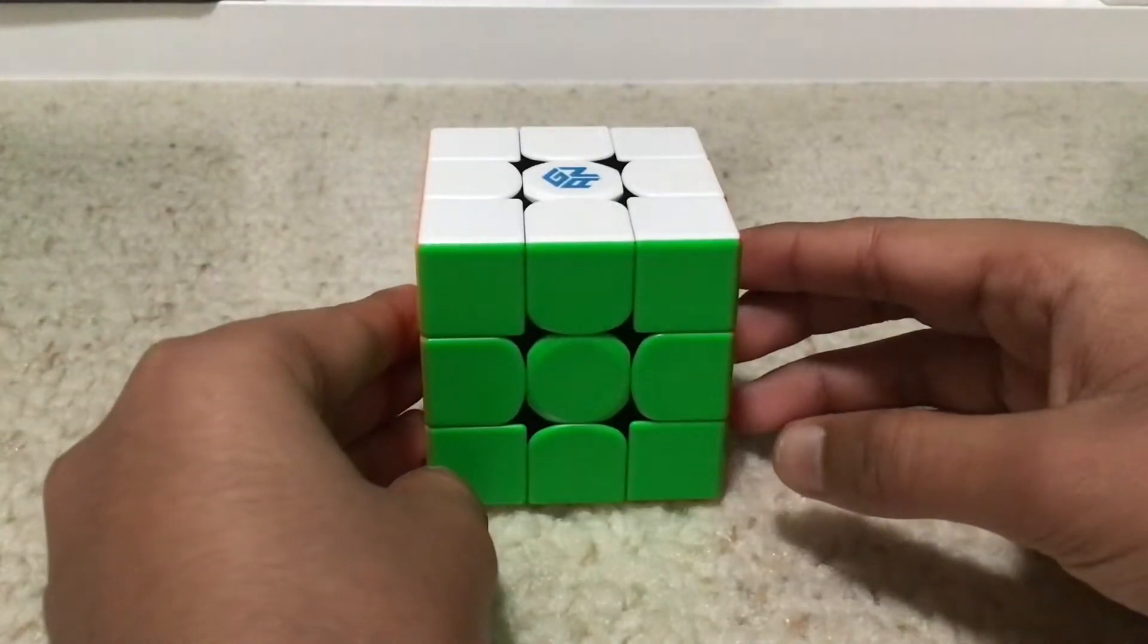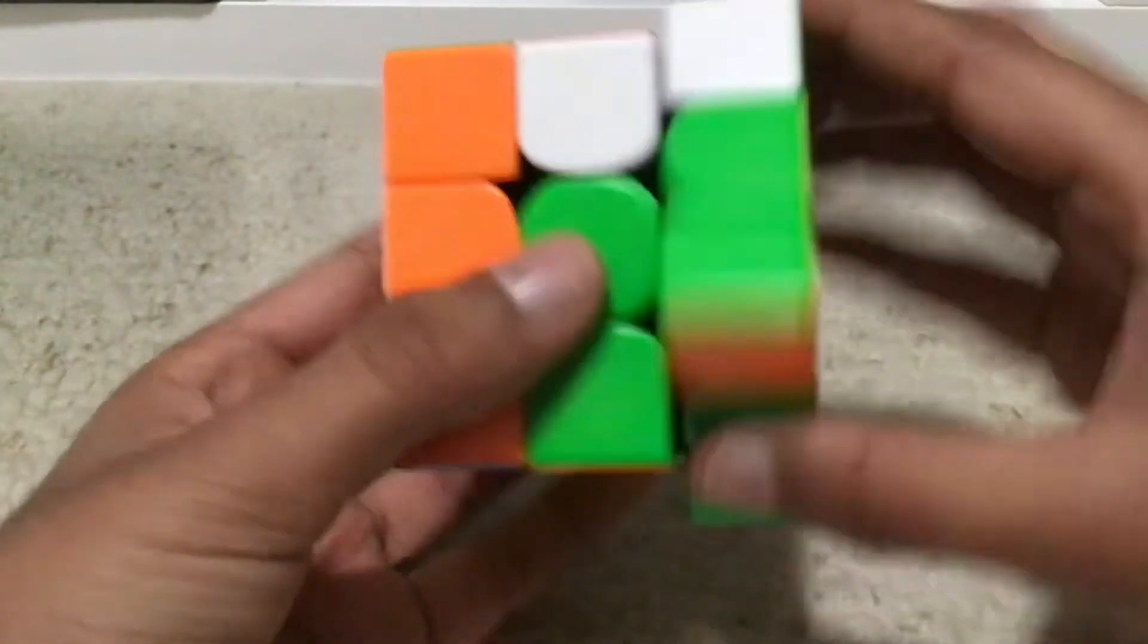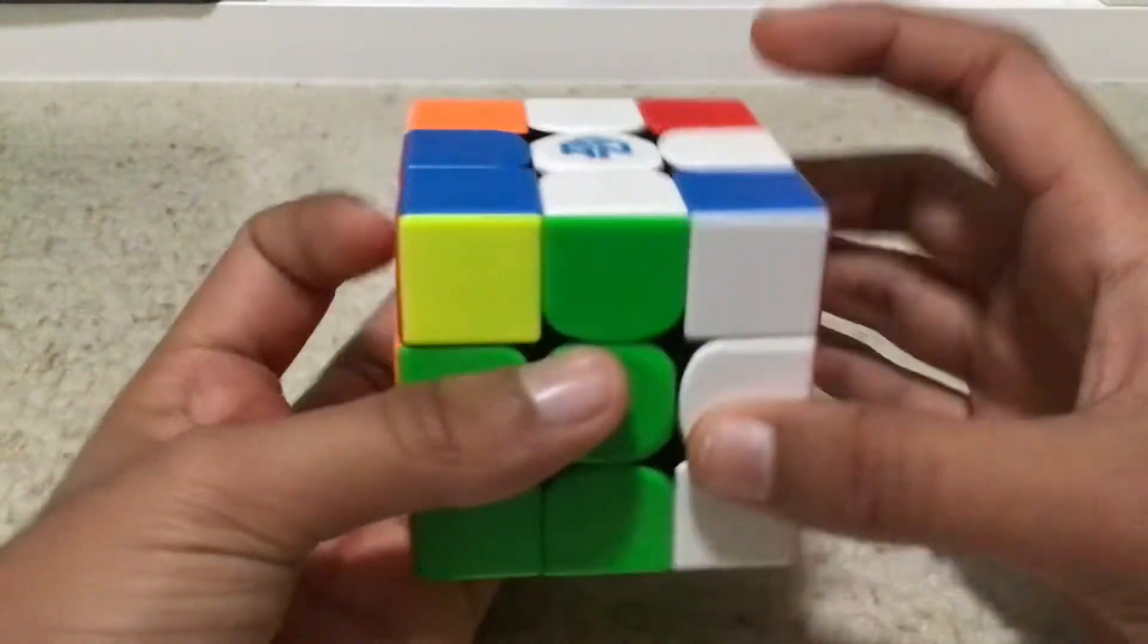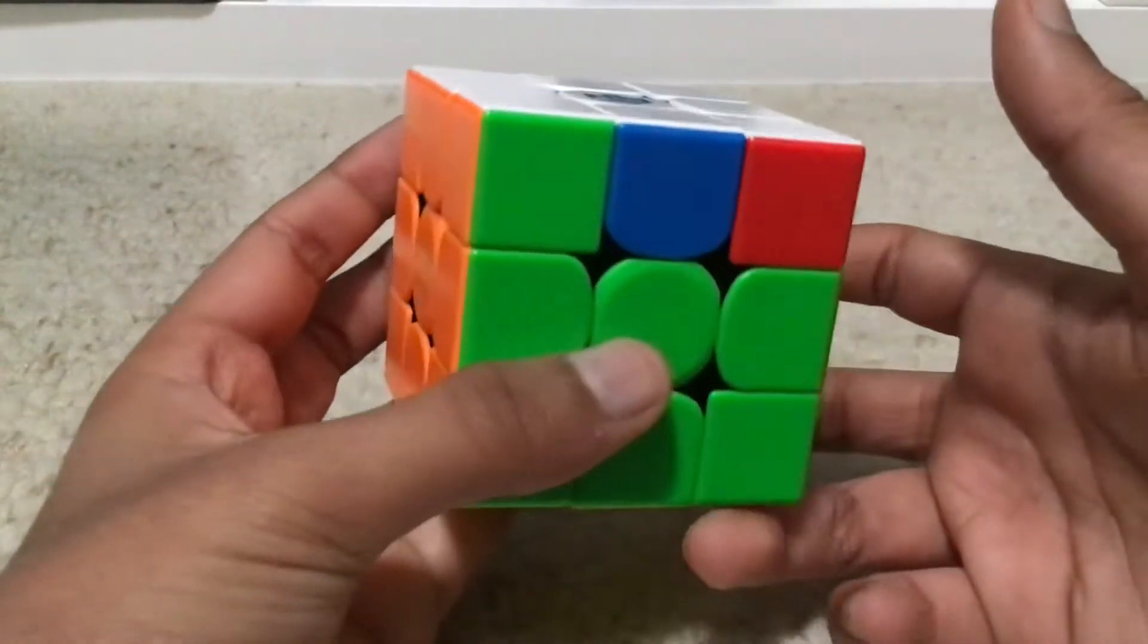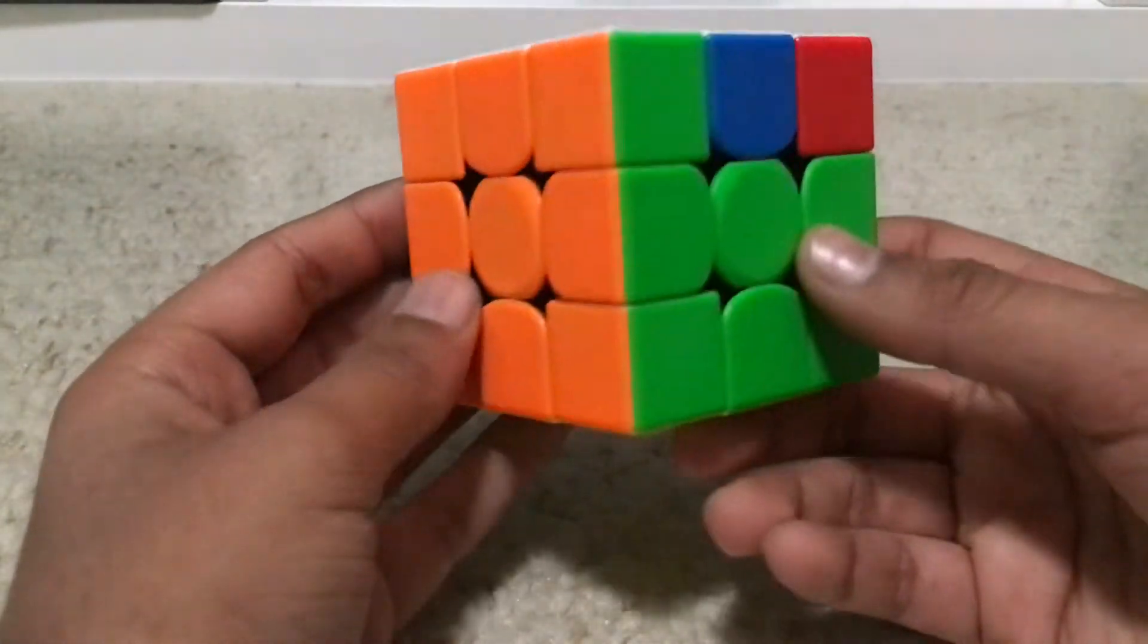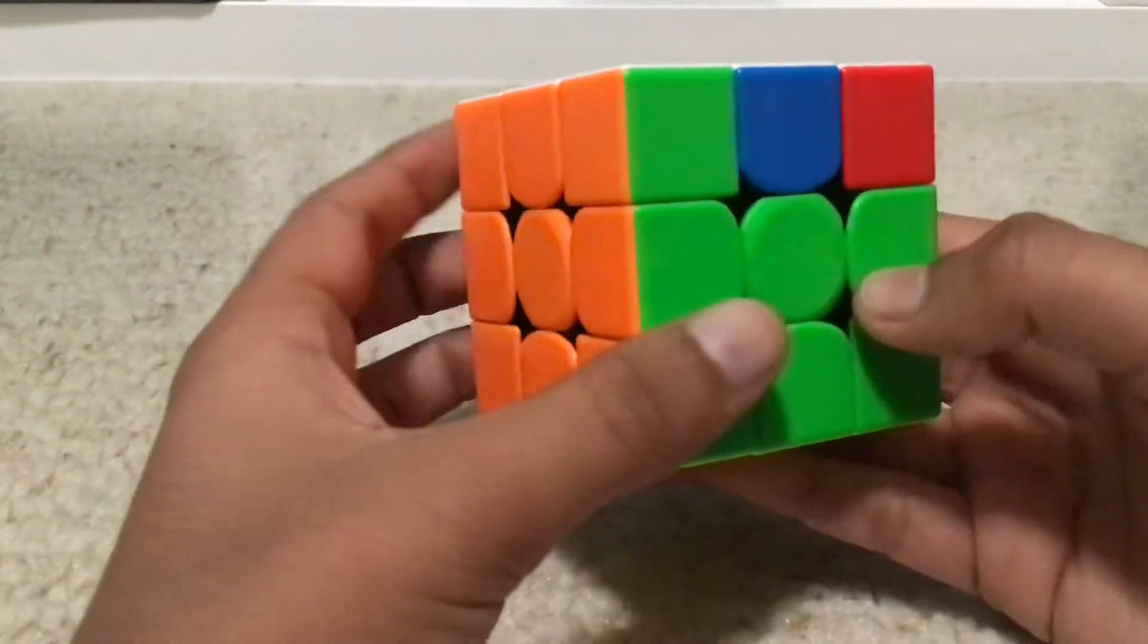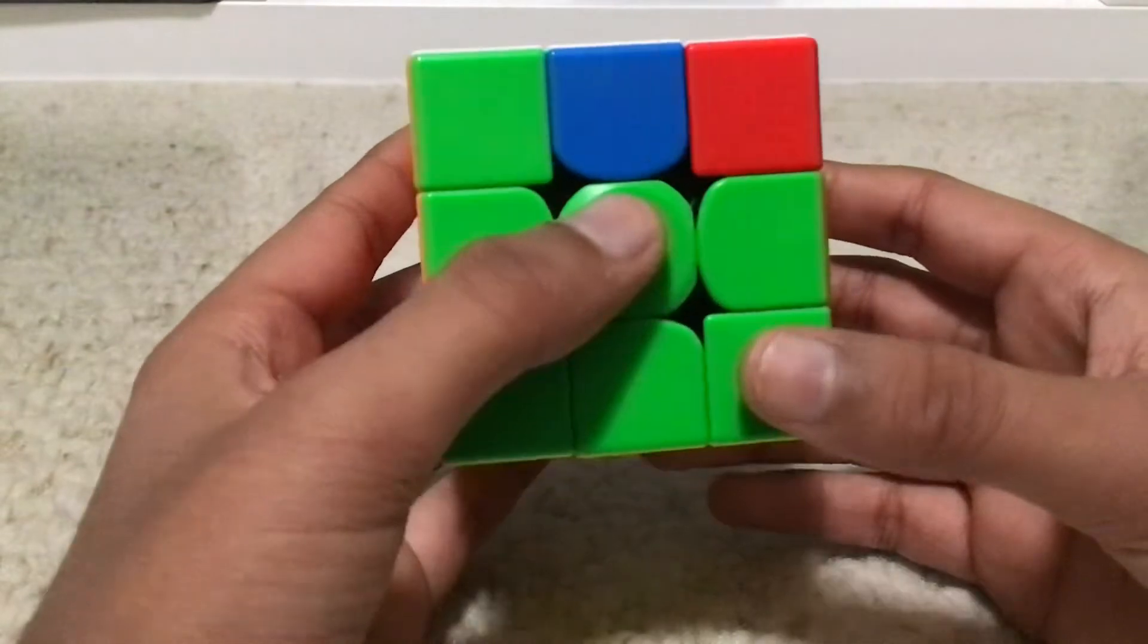Now we're going to be doing the F-perm. This is how the F-perm looks like - a full color here, and these are what the other three sides look like. In a way or two, the F-perm is similar to the T-perm.